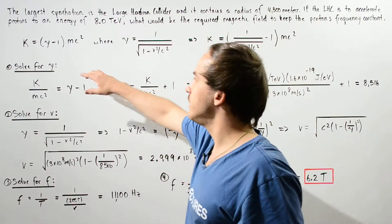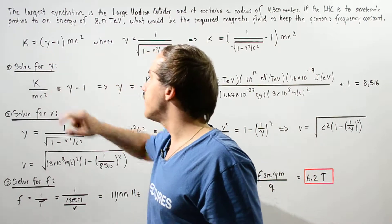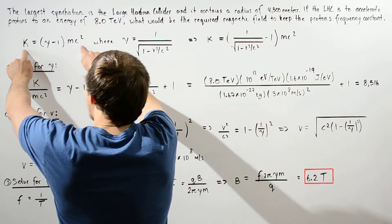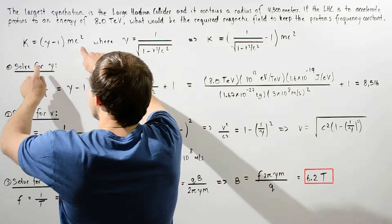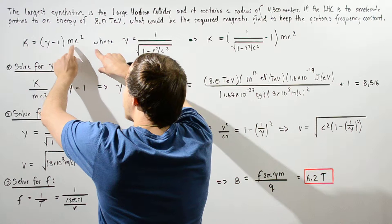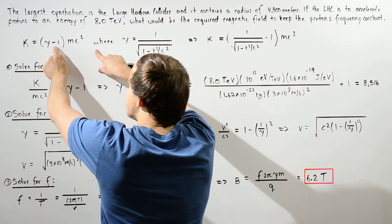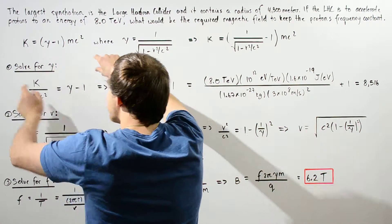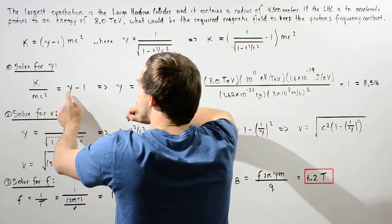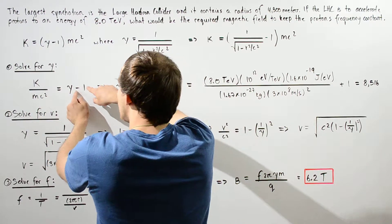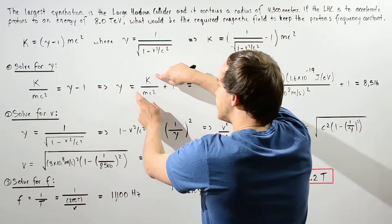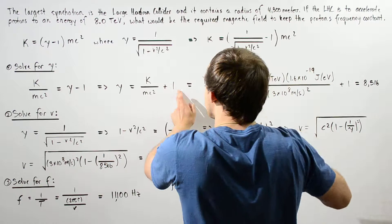Let's begin by calculating the gamma factor. We can use the kinetic energy equation — dividing both sides by MC squared and rearranging gives us: K divided by MC squared equals gamma minus 1. Bringing the 1 to the other side, we get gamma equals K divided by MC squared, plus 1.